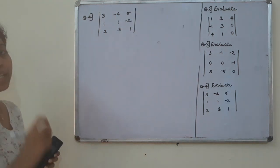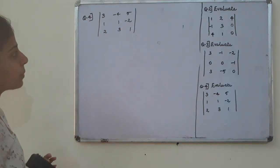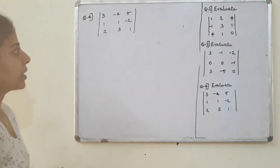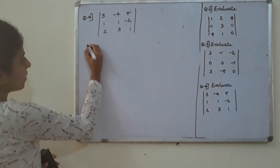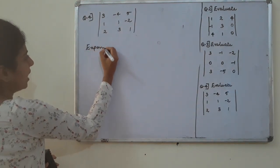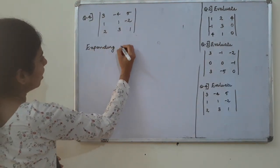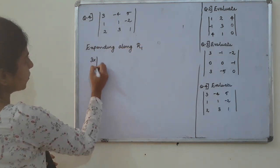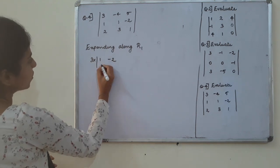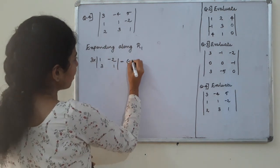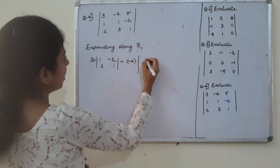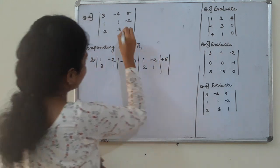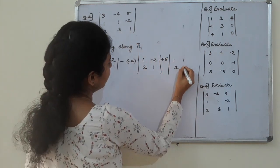If you can see this, you can expand along row 1. Expanding along row 1: 3 into the minor from row 1 column 1 — entries minus 2, 2, 3, 1 — minus of minus 4 into 1, minus 2, 2, 1 — plus 5 into 1, 1, 2, 3.